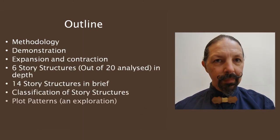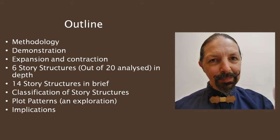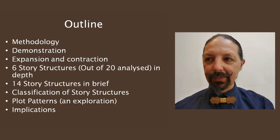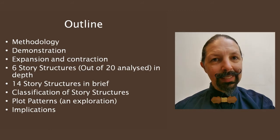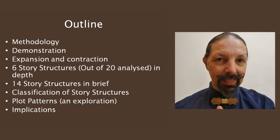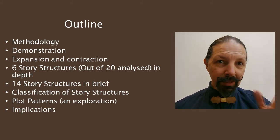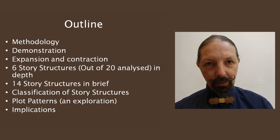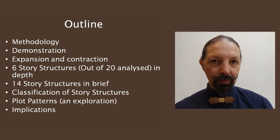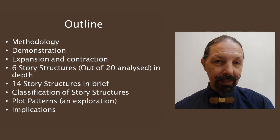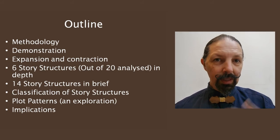The outline of the course covers the basic methodology and a demonstration of how it works. We'll look at the expansion and contraction of stories and the elements of stories. We'll look in particular depth at six story structures. There are 20 distinct story structures I've analysed so far — there may be more — but we'll look at six in depth. Whereas most other courses out there won't give you the whole story and will want you to buy into something else, I will give you the whole 20 in the first course. We won't be able to look at the remaining 14 in great detail, but you'll have enough detail to work with them on your own.